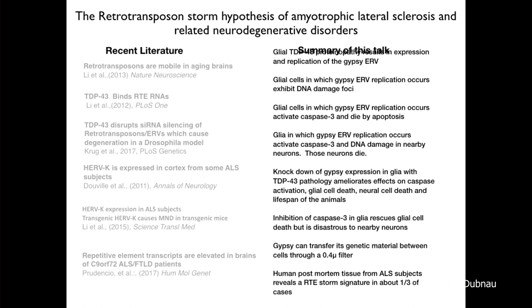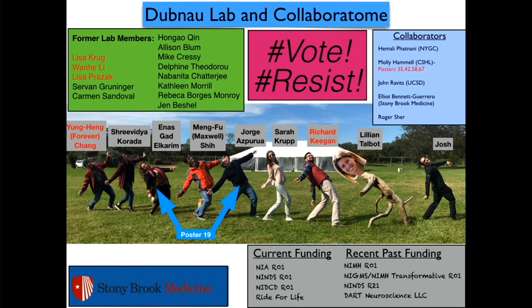One result I didn't show: GYPSY can transfer its genetic material through a 0.4-micron filter. Although we have not shown this directly, we don't know yet what the toxic entity is that is released from glial cells onto neurons — we of course love the idea that it's some viral movement of GYPSY from glial cells to neurons, but that remains to be determined. Rich Keegan did the S2 cell work; essentially all of the non-cell-autonomous in vivo work was done by postdoc Forever. Jorge and Inas have poster number 19 with a toolbox for manipulating and observing retrotransposons in flies. Collaborator Molly Hamill has a number of posters on human tissue — please visit, and please vote on Tuesday.